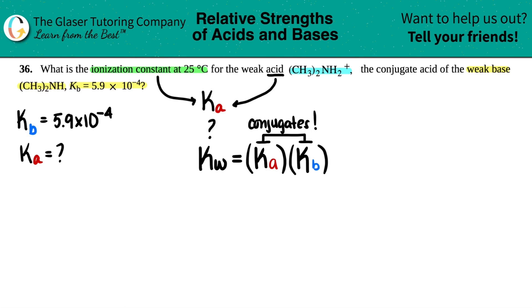But now the acid has two hydrogens at the end, right? NH₂. And the base has just one hydrogen. So it's all the same except for one hydrogen. And that's why we can use this formula. They told us that the Kb was 5.9 times 10 to the negative fourth.